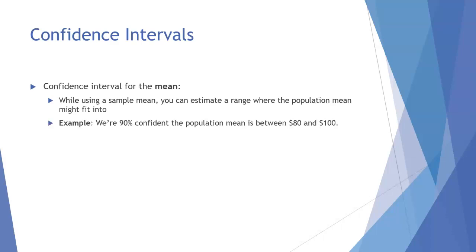For example, we are 90% confident that our population mean is somewhere between $80 and $100. That's what our end goal will be when we are making these confidence intervals - to come up with a statement like that.